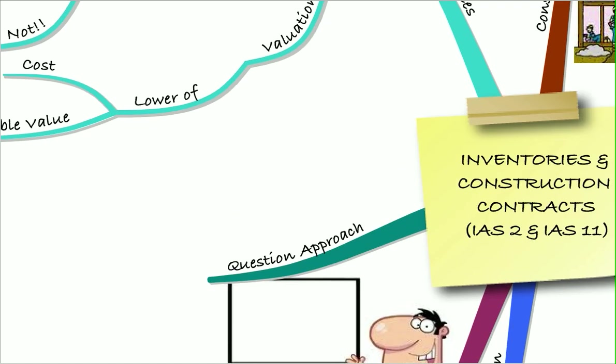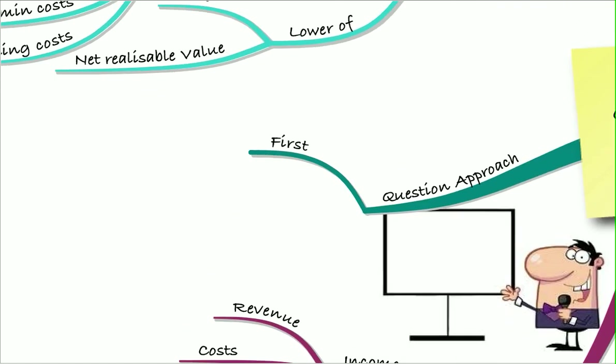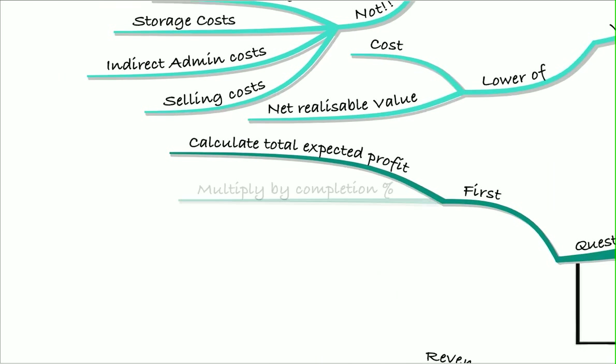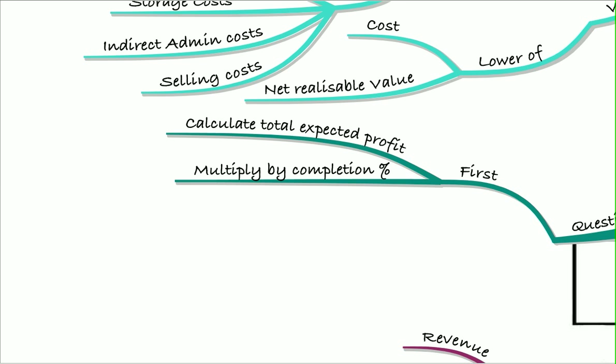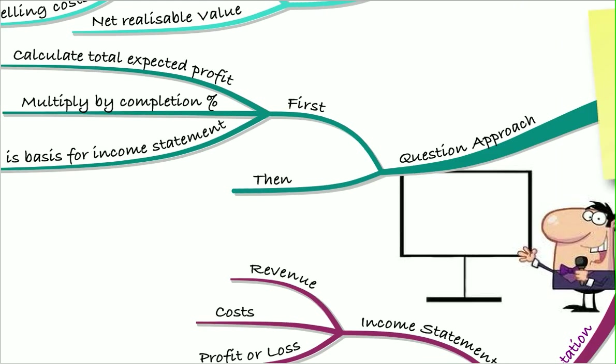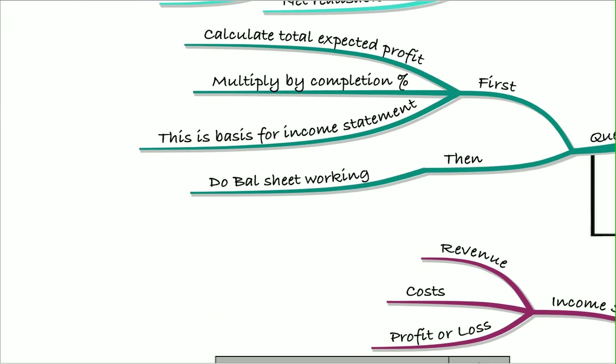The question approach, therefore, was the first thing to do was to calculate your total expected profit. You then multiplied that by the completion percentage. And that was the basis for the income statement. We know that's how much profit we're going to recognize. Then we did the balance sheet working to see if we had amounts due to or from customers.